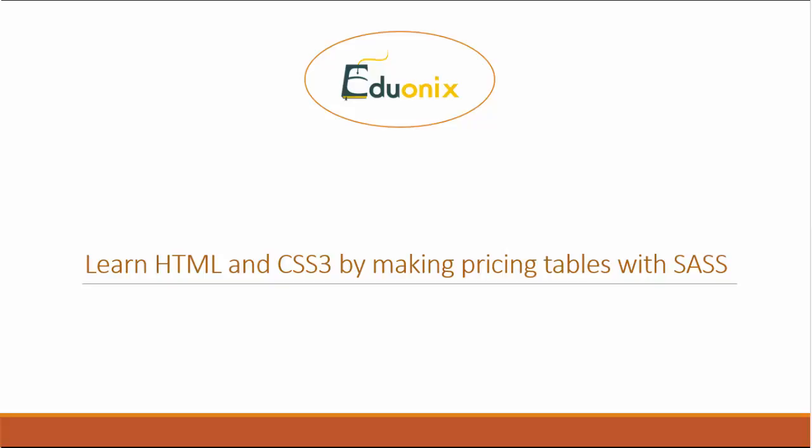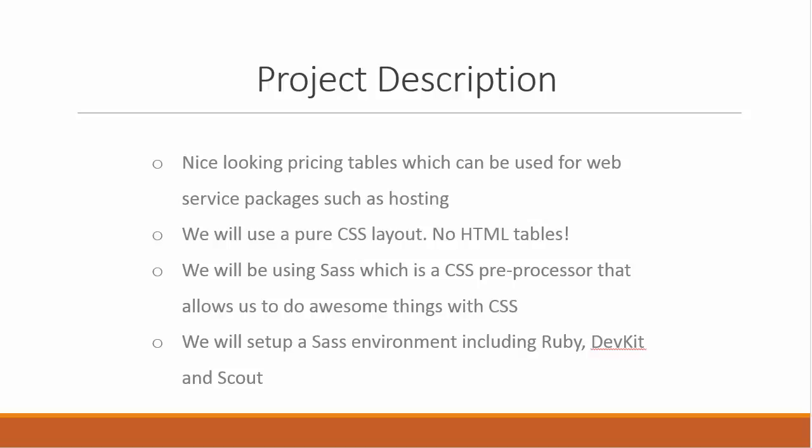There are a few different things we need to use SASS. One is the Ruby programming language — it runs on Ruby, so we'll have to install that. We're also going to install something called Dev Kit, which will allow us to use Ruby commands in the command line. Don't get overwhelmed — we're not really going to use the command line, maybe one or two commands. Then we're going to use a program called Scout, which will compile our SASS code and generate a CSS file.